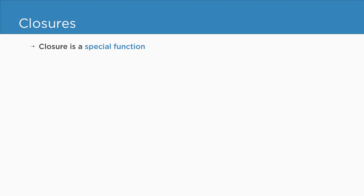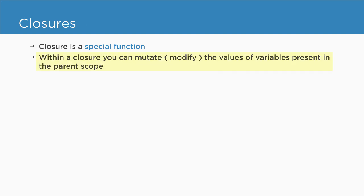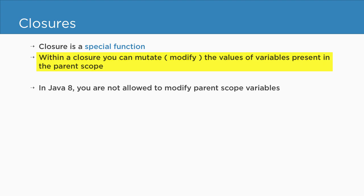A closure can be defined as a special function within which you can mutate or modify the values of the variables present in the parent scope. In Java 8, you are not allowed to modify the parent scope variables within the closure or within the function. But in modern programming languages like Dart and Kotlin, you are allowed to modify the values of the variables present in the parent scope within the closure.